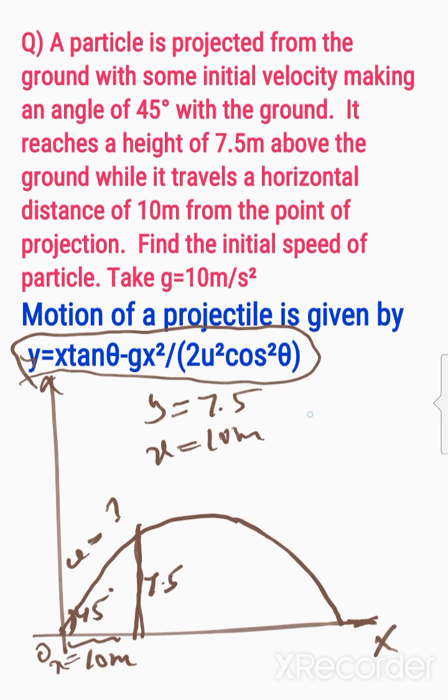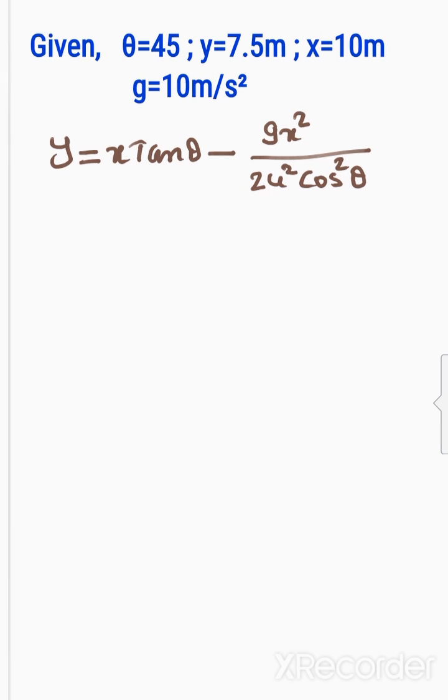This is the formula of projection of a projectile. Y is the vertical distance and X is the horizontal distance, so y equals x tan θ minus gx² divided by 2u²cos²θ.